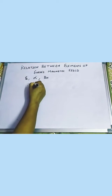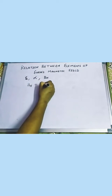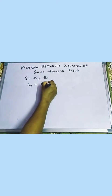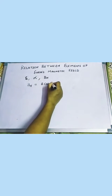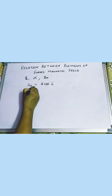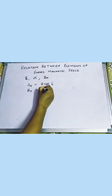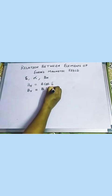We have already seen that BH is B cos del. Its value will be maximum at equator. And the vertical component is B sin del.